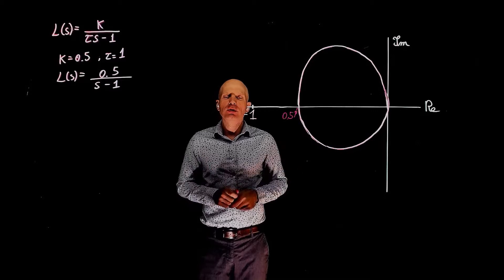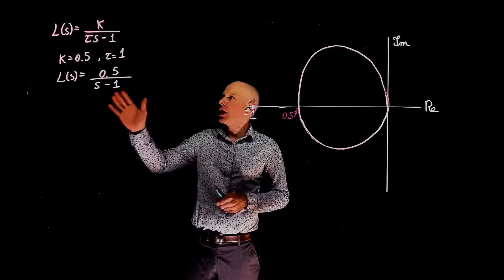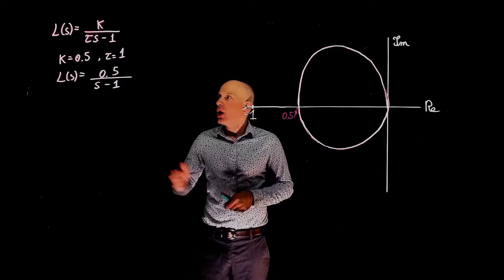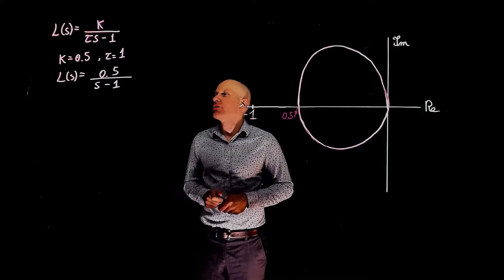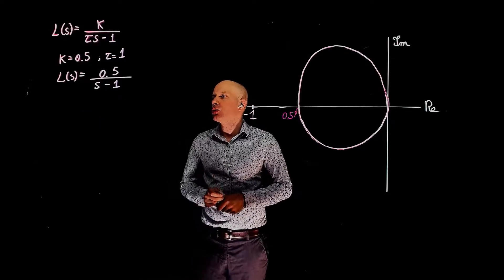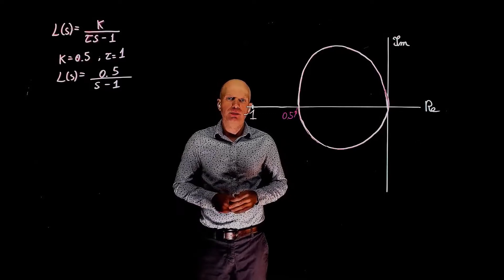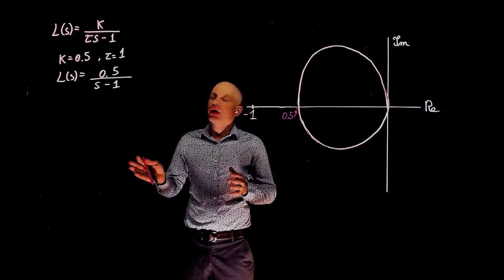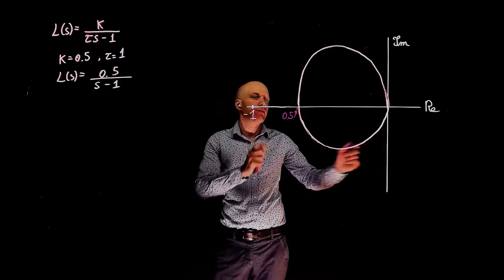A negative unit feedback loop has a loop function L given here. When k equals 0.5 and tau equals 1, we have L equals 0.5 over s minus 1. The Nyquist plot of the function L is given here.